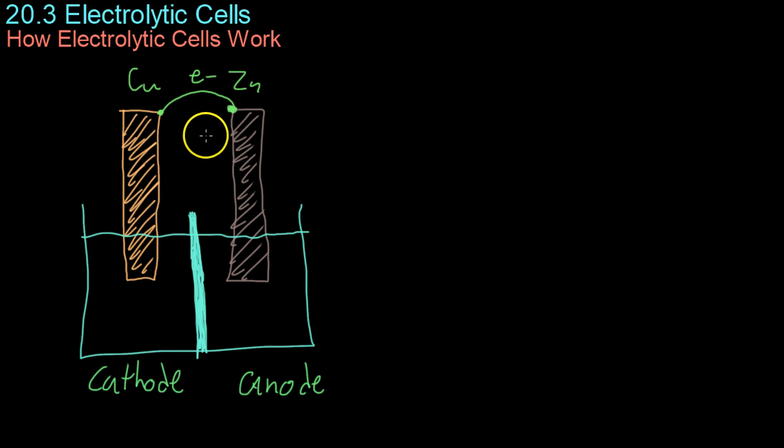However, in an electrolytic cell, the cathode and anode are reversed because you attach a series of DC batteries. Therefore, the current reverses direction, so you have to switch the anode and cathode, because then oxidation occurs over here on the copper, and reduction occurs over here on the zinc.